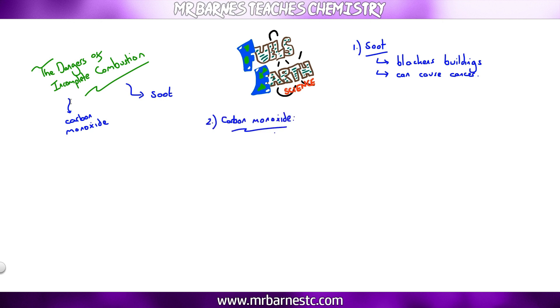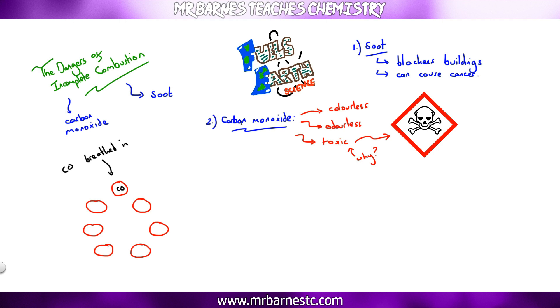The main thing you're going to be asked on, though, is carbon monoxide. And the key thing is that carbon monoxide is colourless, so you can't see it. It's odourless, so you can't smell it. And it's toxic, which means it's poisonous. And what you need to know is why. So if we have a look at some red blood cells, we breathe in normally, but if we breathe in carbon monoxide by mistake, carbon monoxide attaches itself to the red blood cells. And in particular, it binds with the haemoglobin.